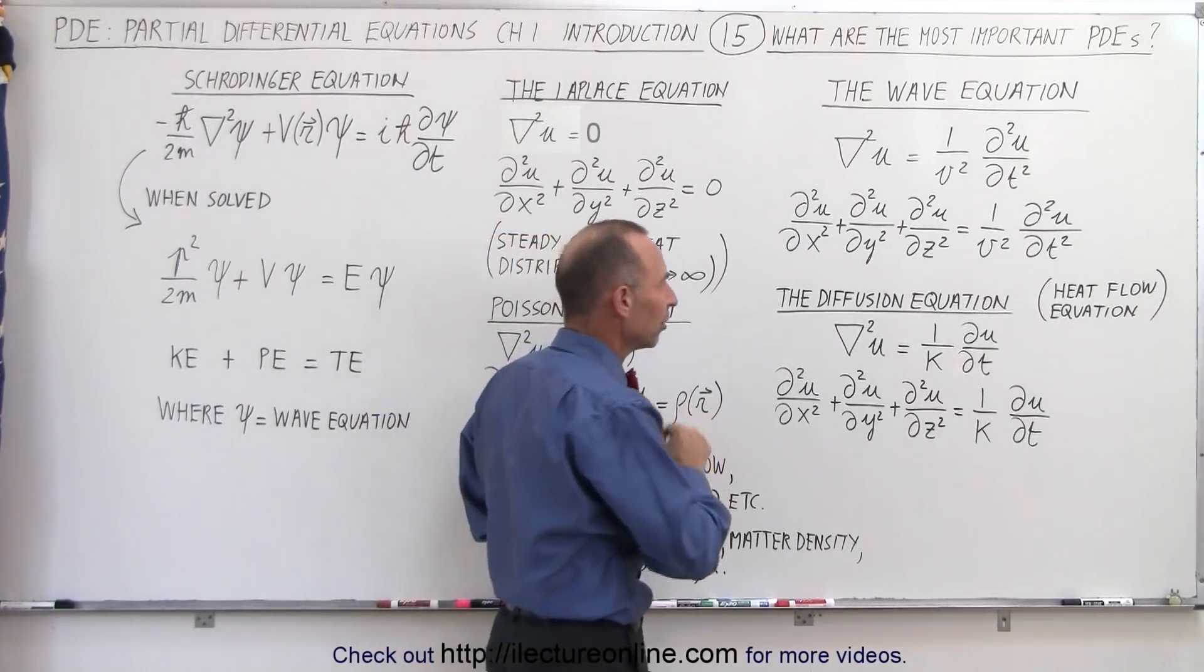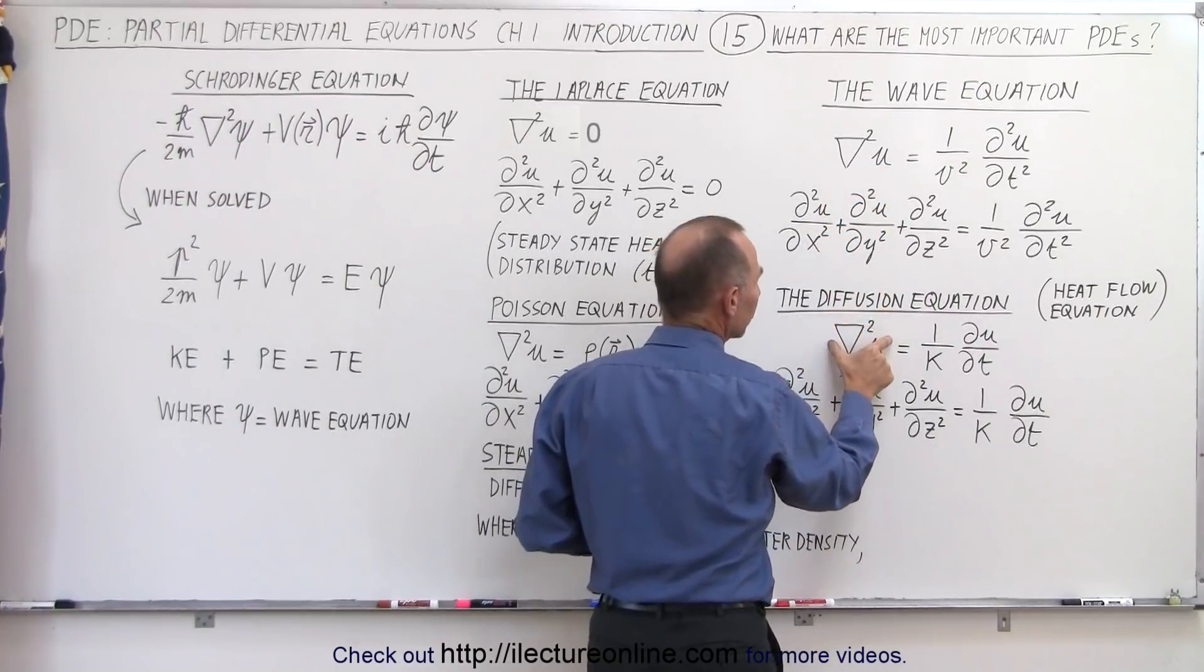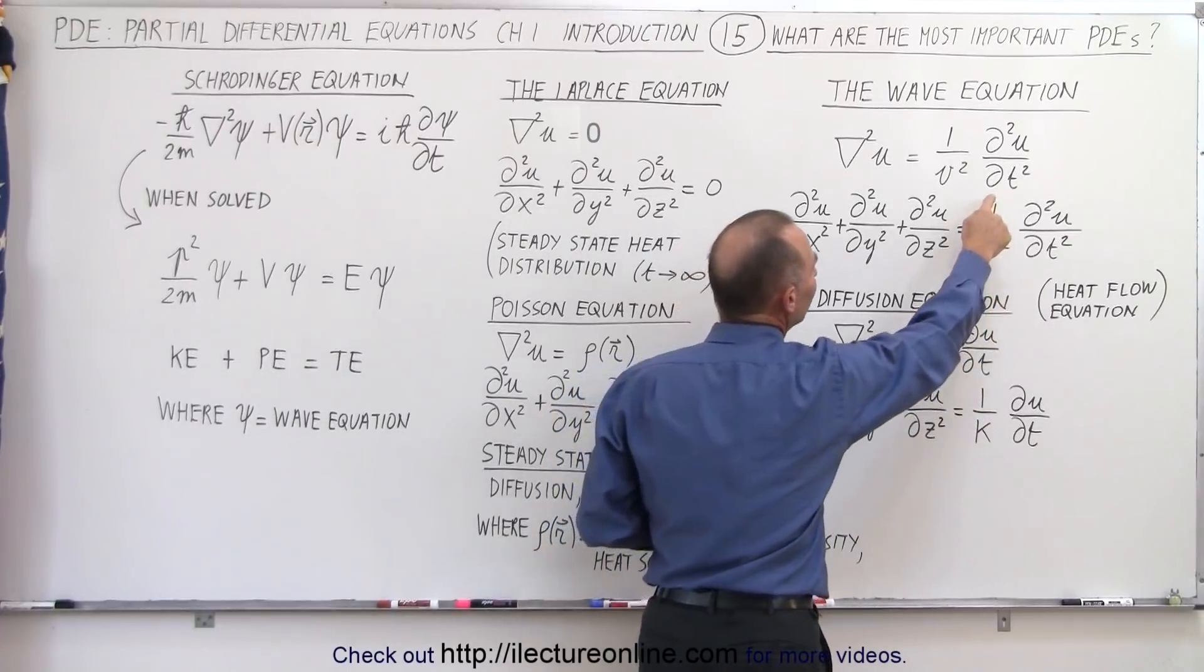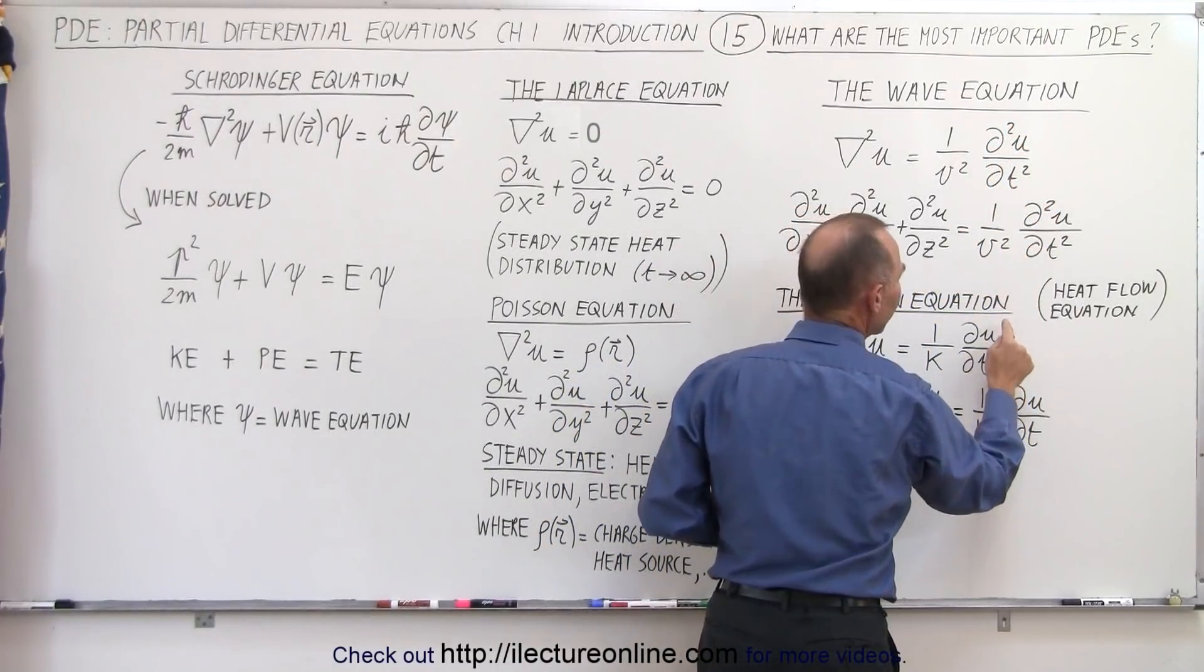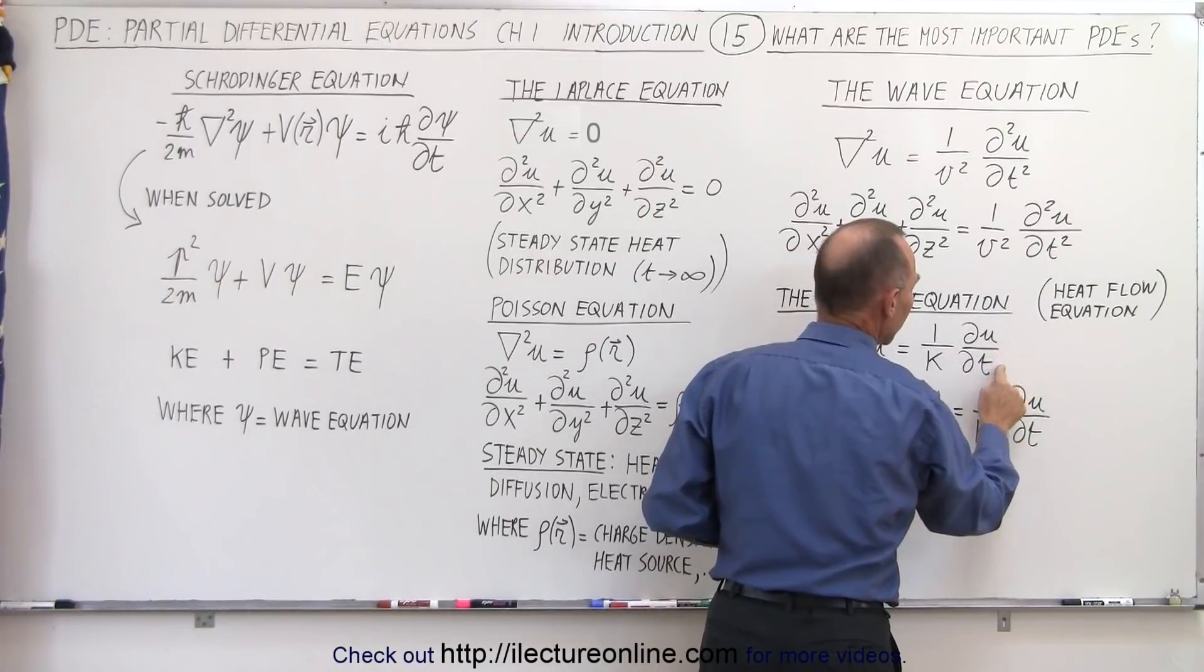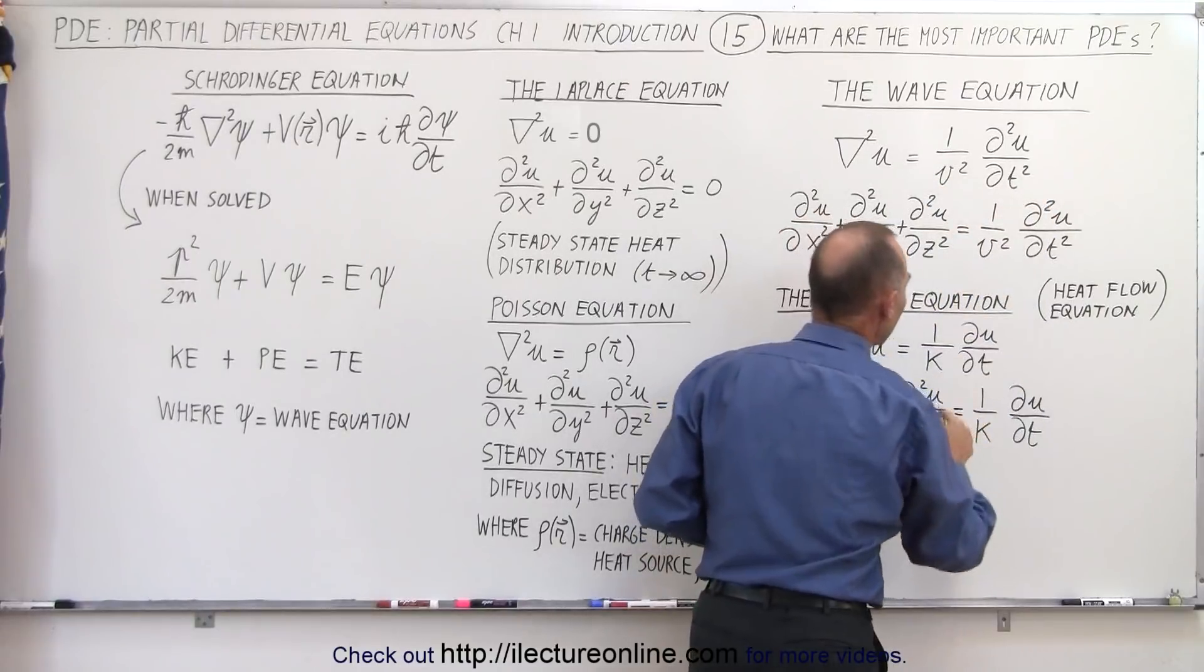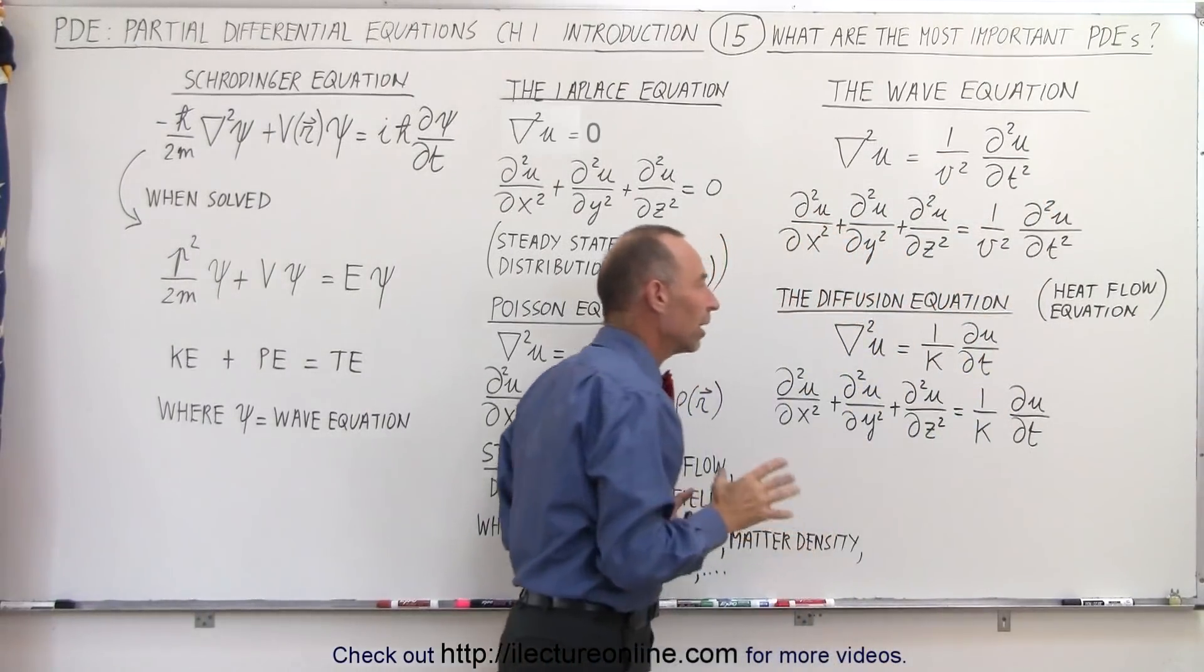The diffusion equation is a little bit different. Notice on the left side we still have the Laplacian of the function. Again, it could be in three, two, or one dimension. On the right side, however, instead of having the second derivative of the function with respect to time, we only have the first derivative of the function with respect to time. Instead of one over velocity squared, where v is the velocity of the wave, here we have one over k, which is related to the diffusion constant.